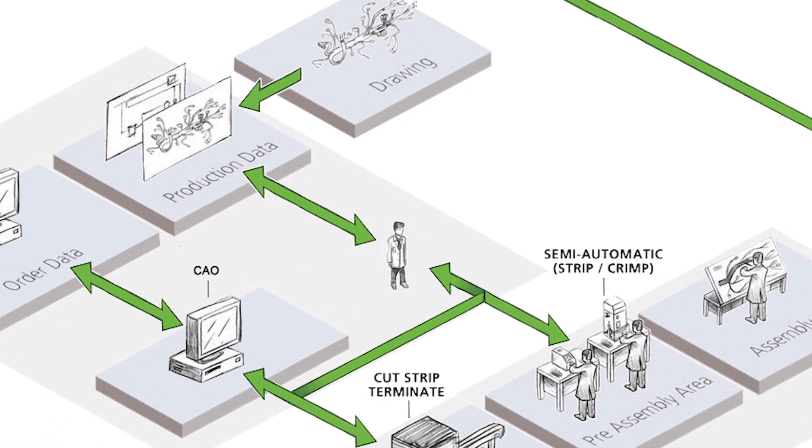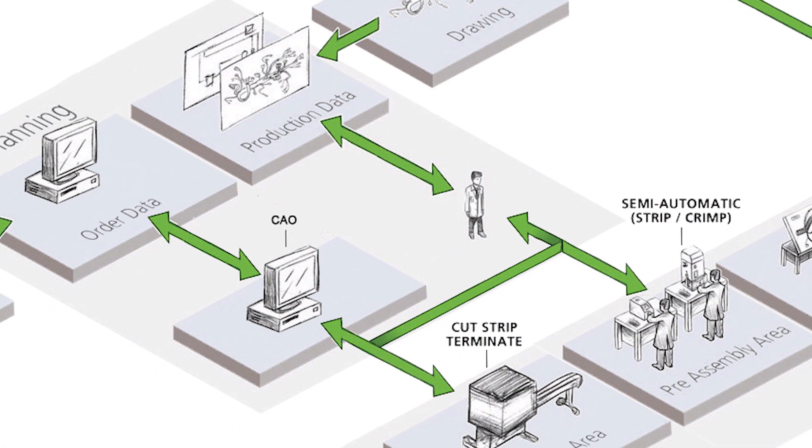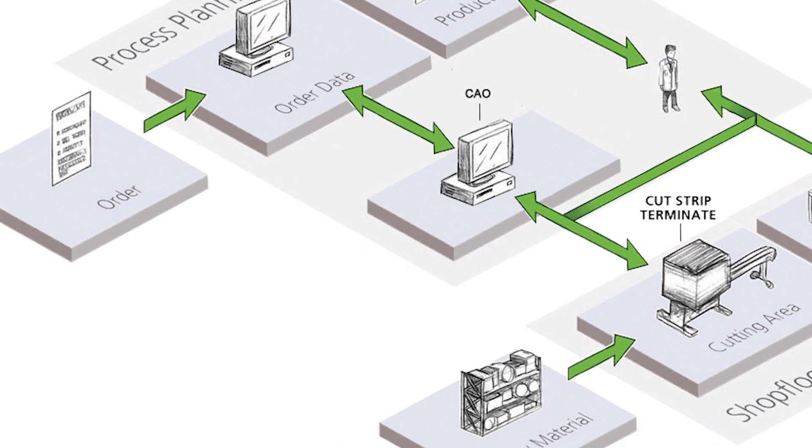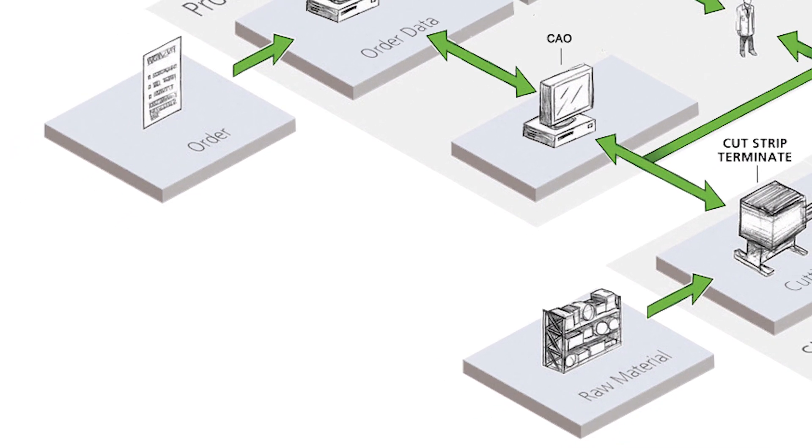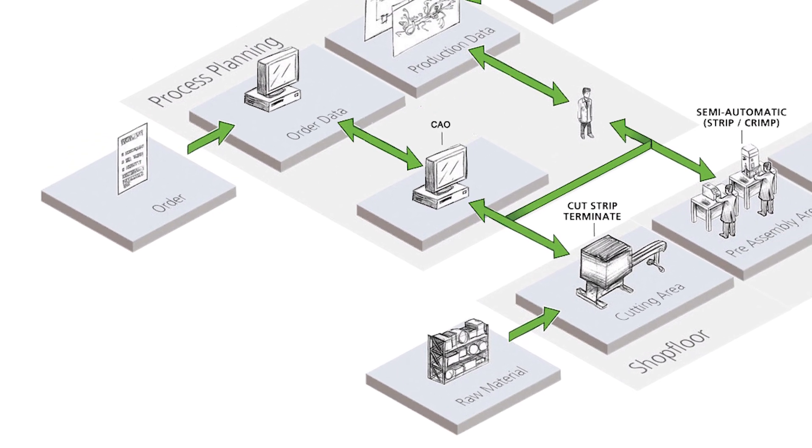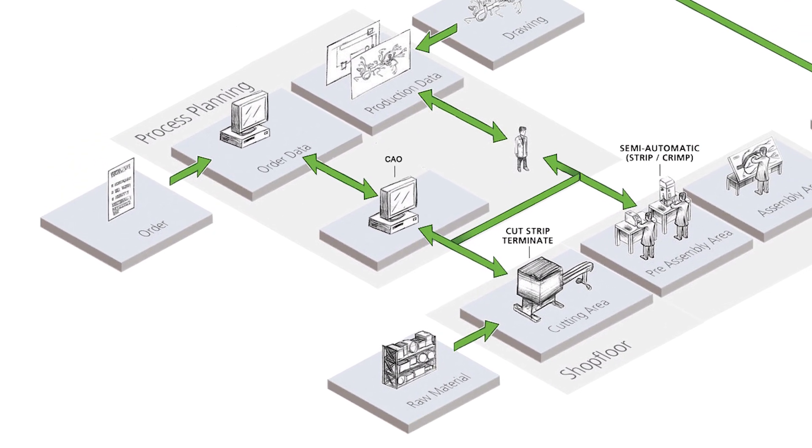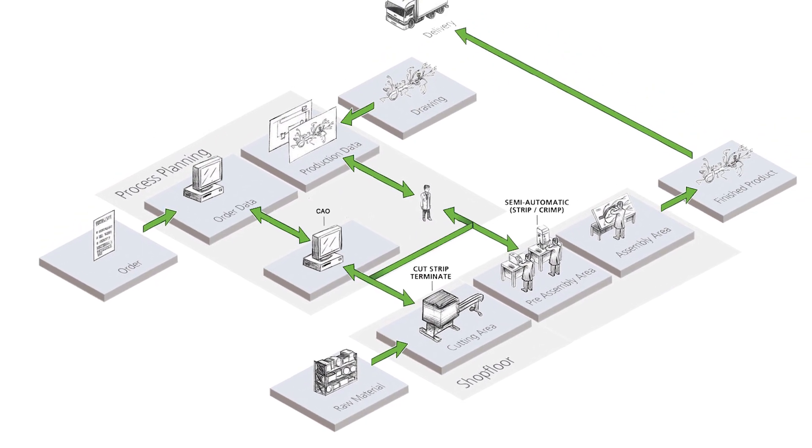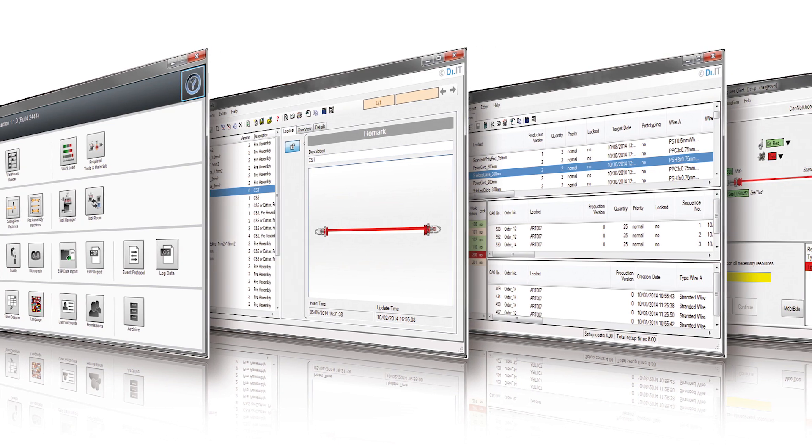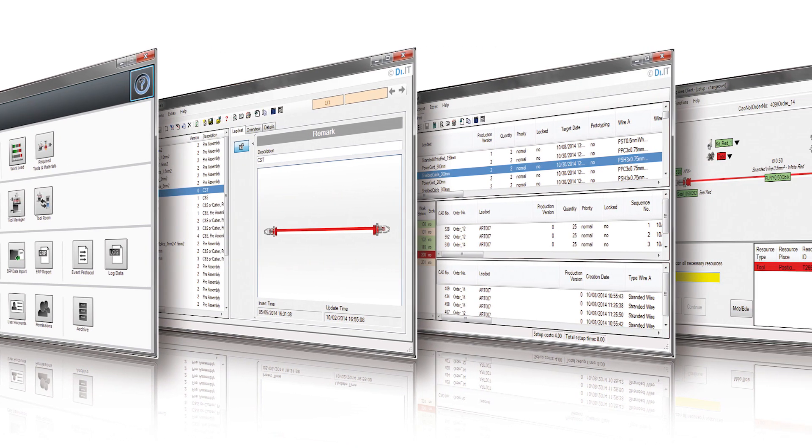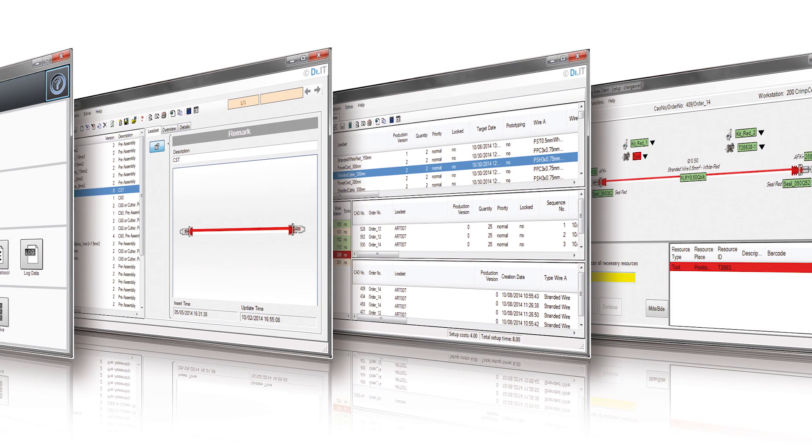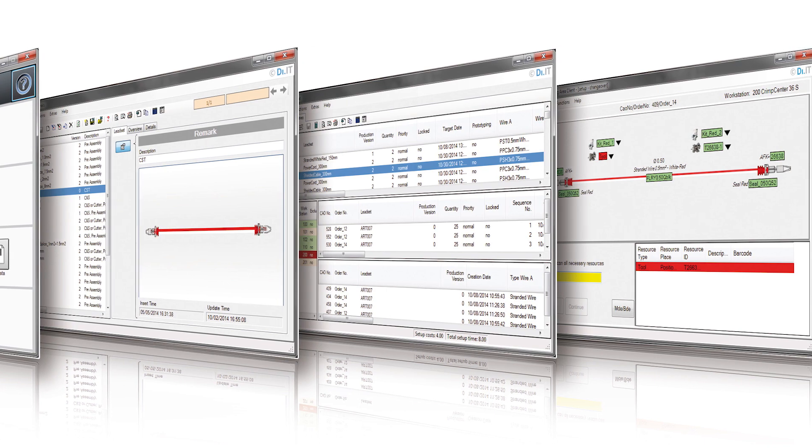Take your production optimization to the next level with Schleuniger's Manufacturing Execution System, CAO. CAO takes over the planning and monitoring of all wire processing machines. It extracts data from the order management system, for example ERP, and compiles consistent orders. These are grouped according to the best workflow principle and assigned to individual machines. In particular, this enables clients with various order volumes and small batch sizes to produce more efficiently and to have access to relevant production and machine data.